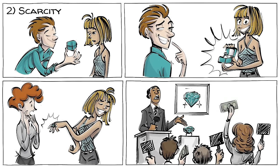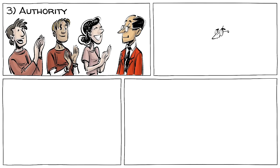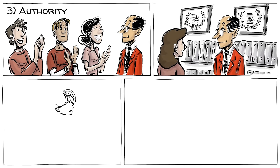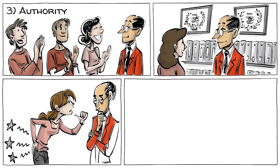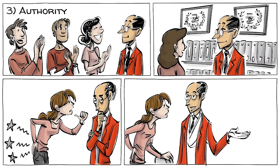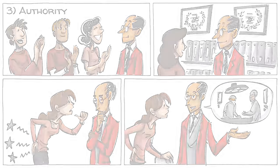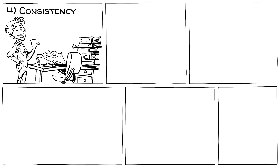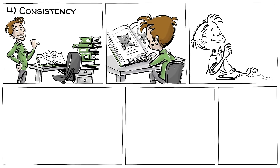The third principle is authority. We often trust powerful people and their perceived expertise. We seek their guidance particularly in situations of uncertainty, when we lack direction and need help from someone else to make a difficult decision on our behalf.